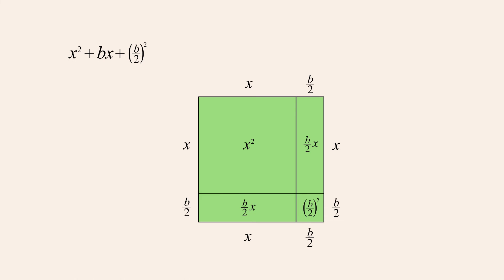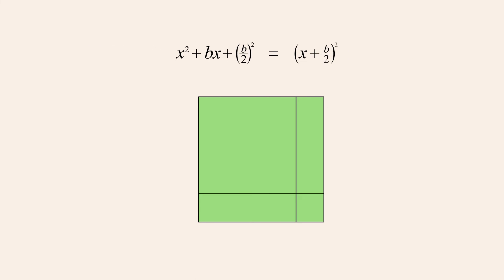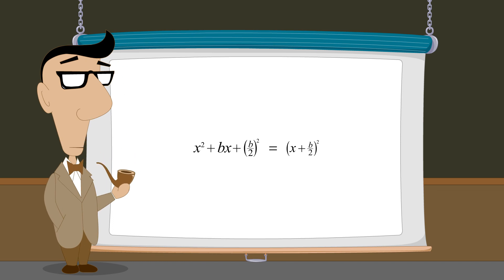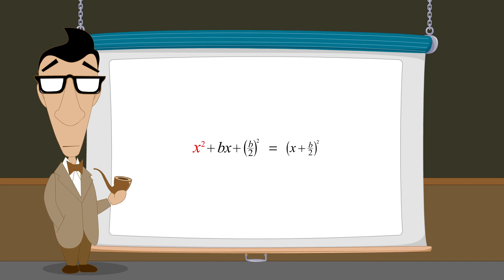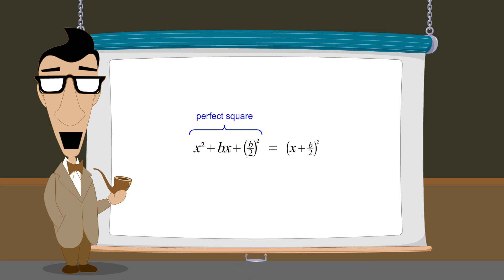Since the sides of this square have a length of x plus b over 2, the area of the square can be written as either x plus b over 2 quantity squared, or the quadratic expression x-squared plus bx plus b over 2-squared. So, if a quadratic with an x-squared coefficient of 1 has a constant term equal to b over 2-squared, then that quadratic expression will be a perfect square and can also be written as x plus b over 2-squared.